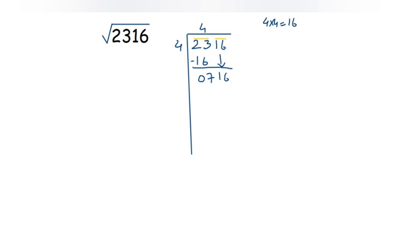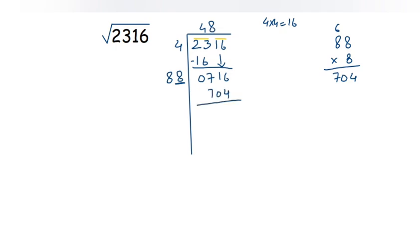Double of quotient 4 is 8. We need a new digit: trying 88 × 8 = 704, which is close to 716 and less than it, so we take 8. The divisor is 88, multiplied by 8 gives 704. Subtract 704 from 716 to get remainder 12. Since remainder is not zero, 2316 is a non-perfect square. Place a decimal point and bring down two zeros, making the new dividend 1200.